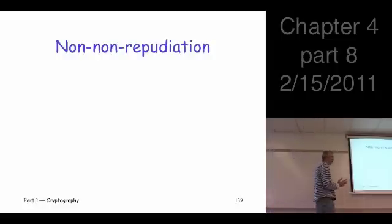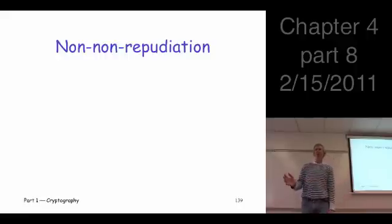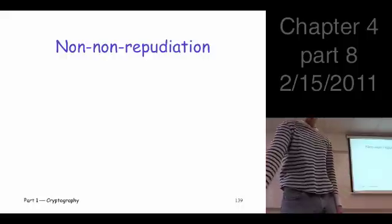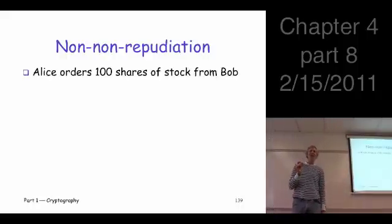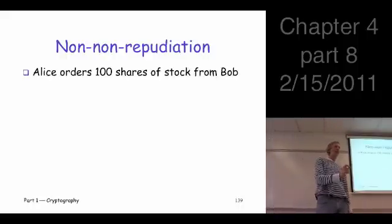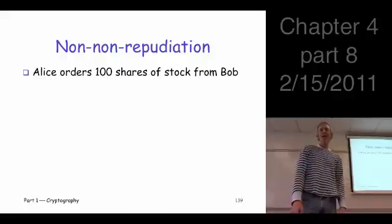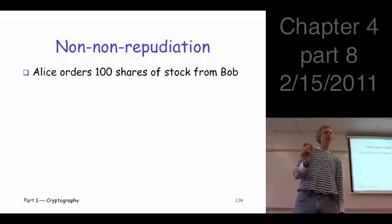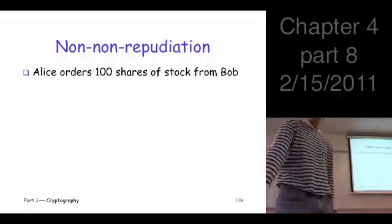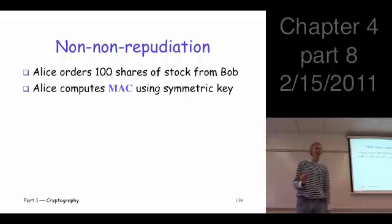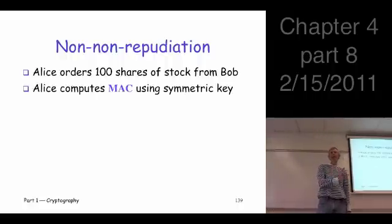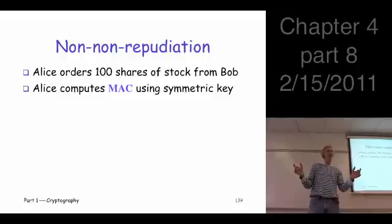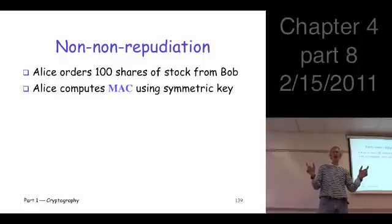But before we get to the non-repudiation, we have to look at a non-example of non-repudiation. So let's suppose Alice orders 100 shares of stock from her favorite stockbroker, Bob. Now, she wants to protect the integrity of this order, of course, so she computes a MAC to protect the integrity. Now, if you compute a MAC, what does that imply? It means that Alice and Bob must share a symmetric key. You have to have a shared symmetric key to make that work.